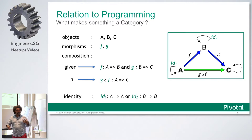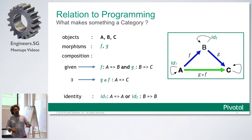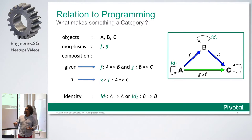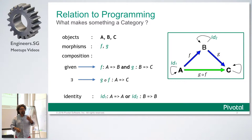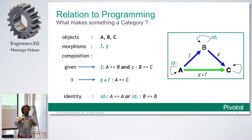A slightly higher level of abstraction would be where we work with higher-kinded types in functional programming — generic types or templates in C++ — where you have a type constructor. The thing you pass into the function is not a realized type, like a list of string in Scala or Java. Before it's a list of type string, it's a list of anything — that unrealized type is also something we're interested in.